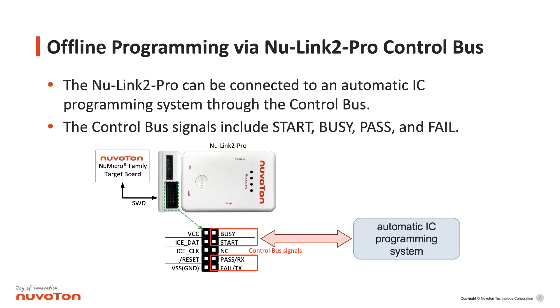The NewLink 2 Pro can be connected to an automatic IC programming system through the Control Bus. There are four signal lines: Start, Busy, Pass, and Fail.